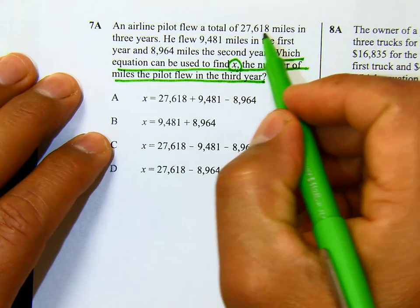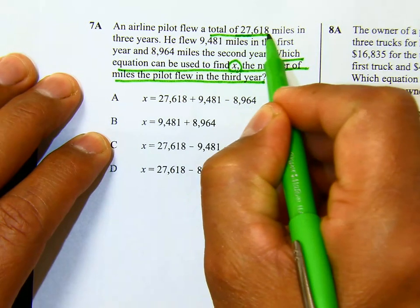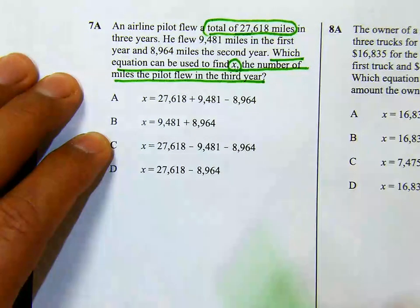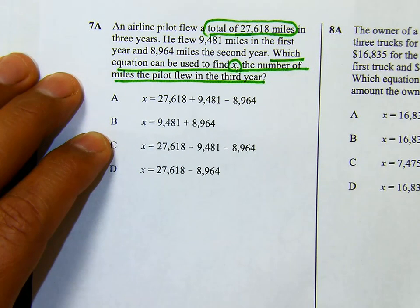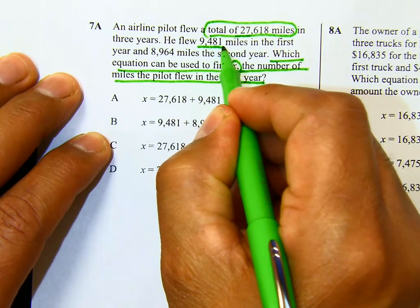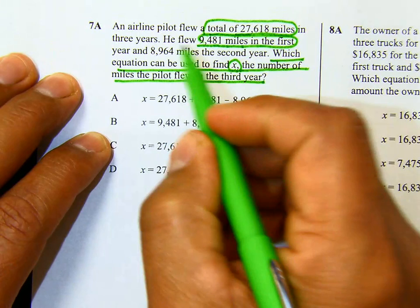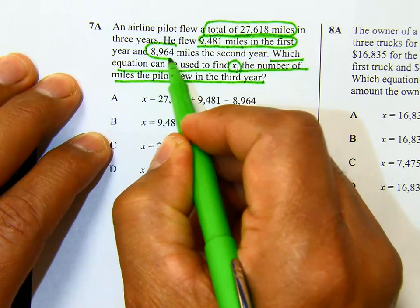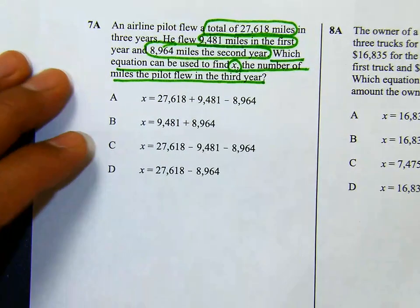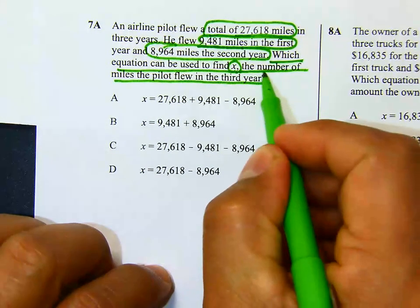We know that he flew a total of 27,618 miles. That is our total. In the first year he flew 9,481 miles, and 8,964 miles in the second year. We want to know how many he flew in the third year.